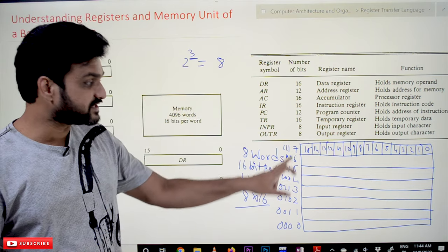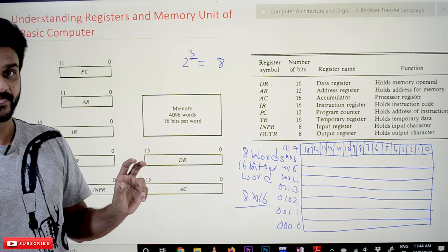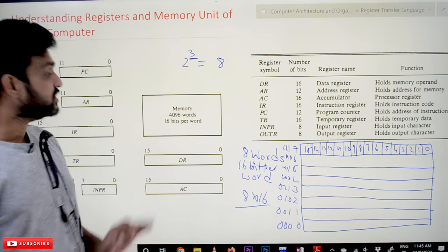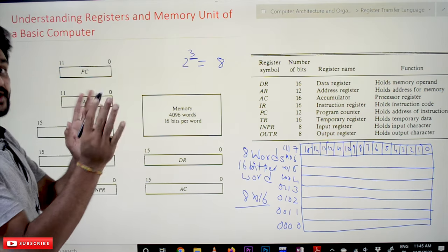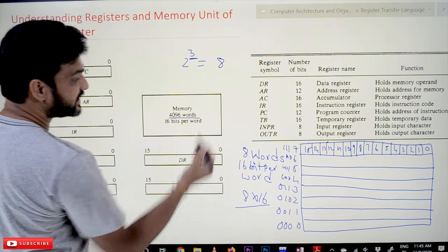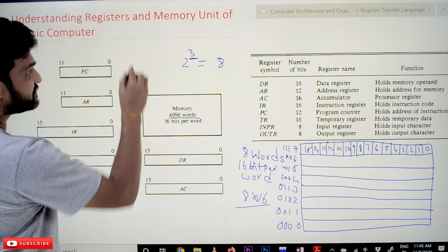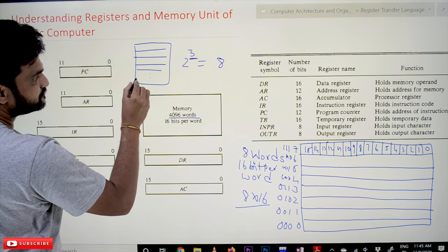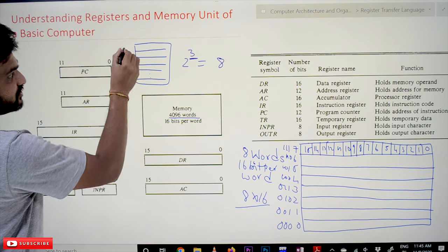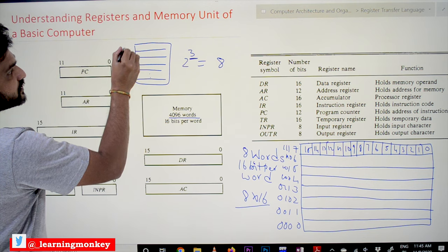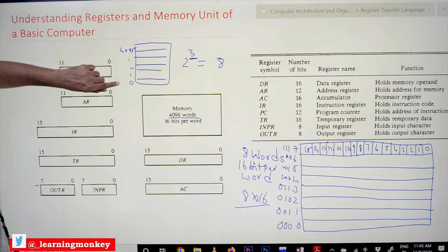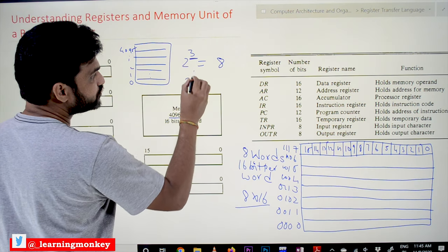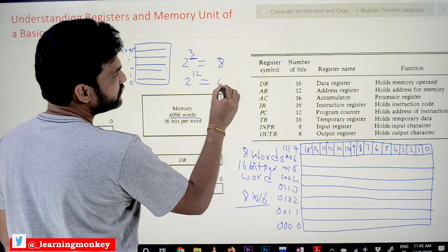Hope you got this understanding. The unique addresses are provided by 2 to the power of the number of words available. In our computer, we have a memory of size 4096 words. The first address is 0, then 1, 2, similarly up to 4095. Each and every address is uniquely identified because 2 power 12 is equal to 4096.